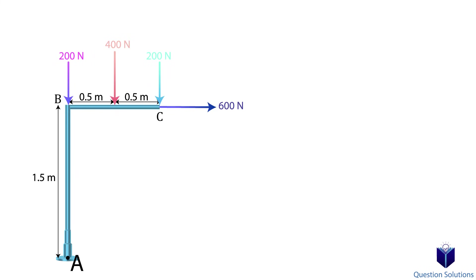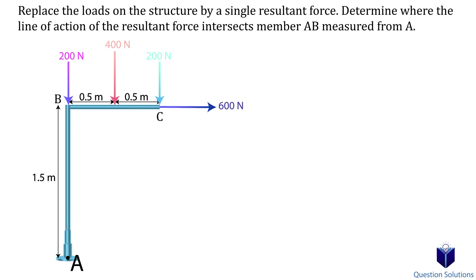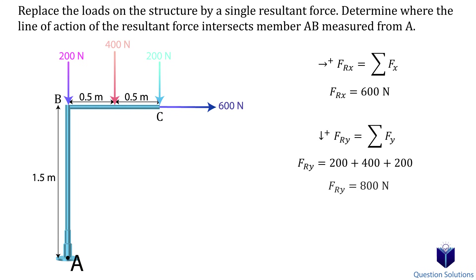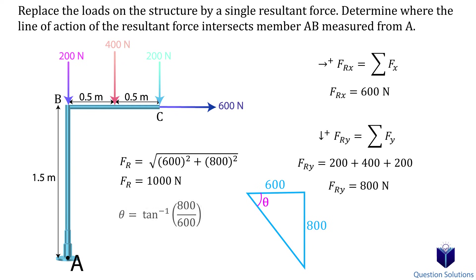In the previous two questions we showed a resultant force and a moment about a specific point. Now we're going one step further and placing the resultant force at a location so that it accounts for the resultant moment as well. The method is similar — let's start with the forces. Picking right to be positive, there's only one x-axis force. Then we add the y-axis forces to find the resultant force and its direction angle using tan inverse.